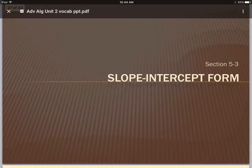Alright, so here we have vocab for 5.3. This is the slope-intercept form of a line we're going to talk about first.